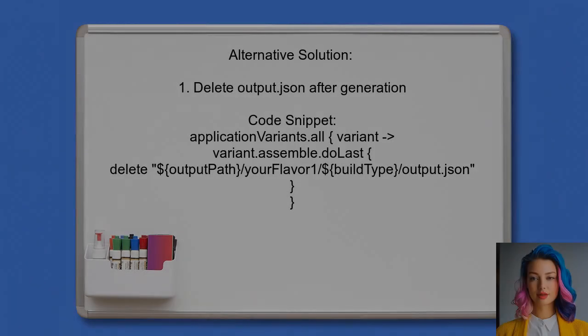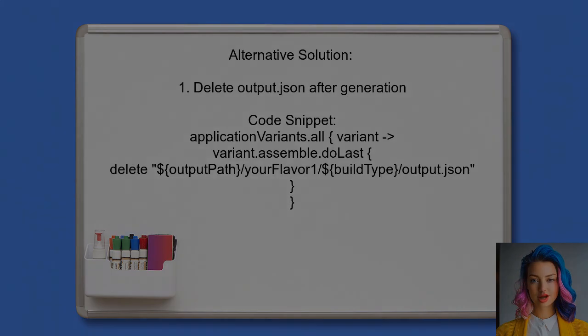One user shared a trick to disable the output.json file generation: they suggest deleting the output.json file right after it's created during the build process.